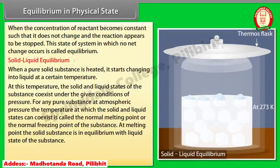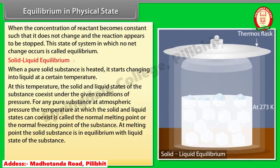Consider ice and water at 273 Kelvin — the melting point of ice — taken in a perfectly insulated thermos flask. An interesting feature of this system is that the temperature as well as the masses of ice and water remain constant. This represents a dynamic equilibrium between ice and water. Since there is no change in mass of ice and water, the number of molecules going from ice into water is equal to the number of molecules going from water into ice. Thus, at equilibrium, the rate of melting is equal to the rate of freezing.